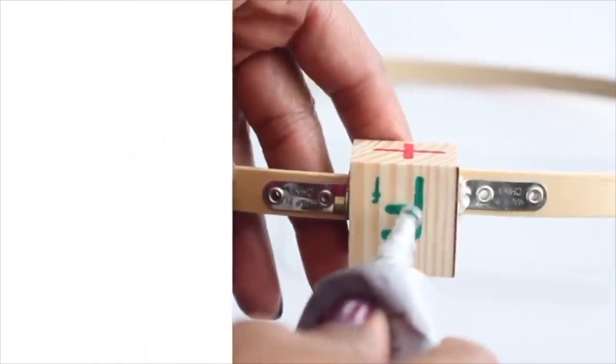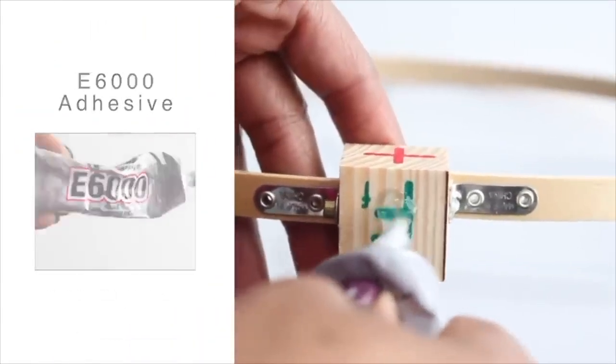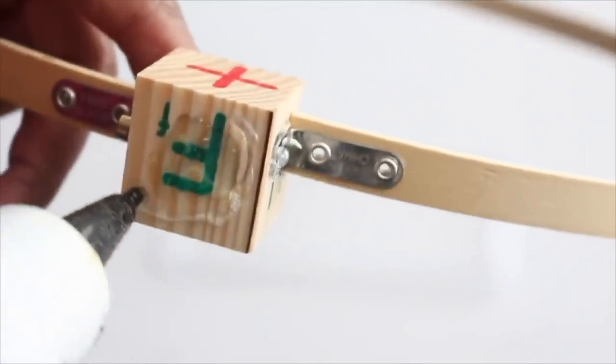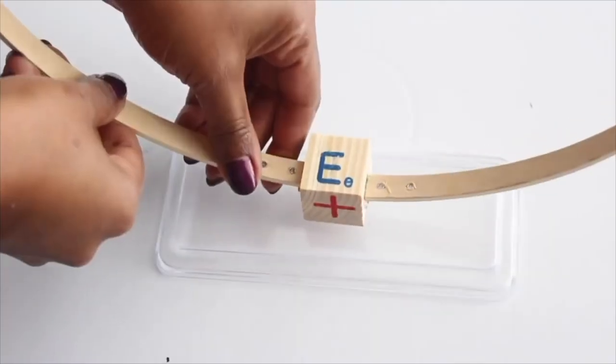Next I'm going to add a little bit of E6000 to the bottom of the block and add a little bit of hot glue around it. I'm going to attach the block to the base of a butter dish that I found at the Dollar Tree as well.